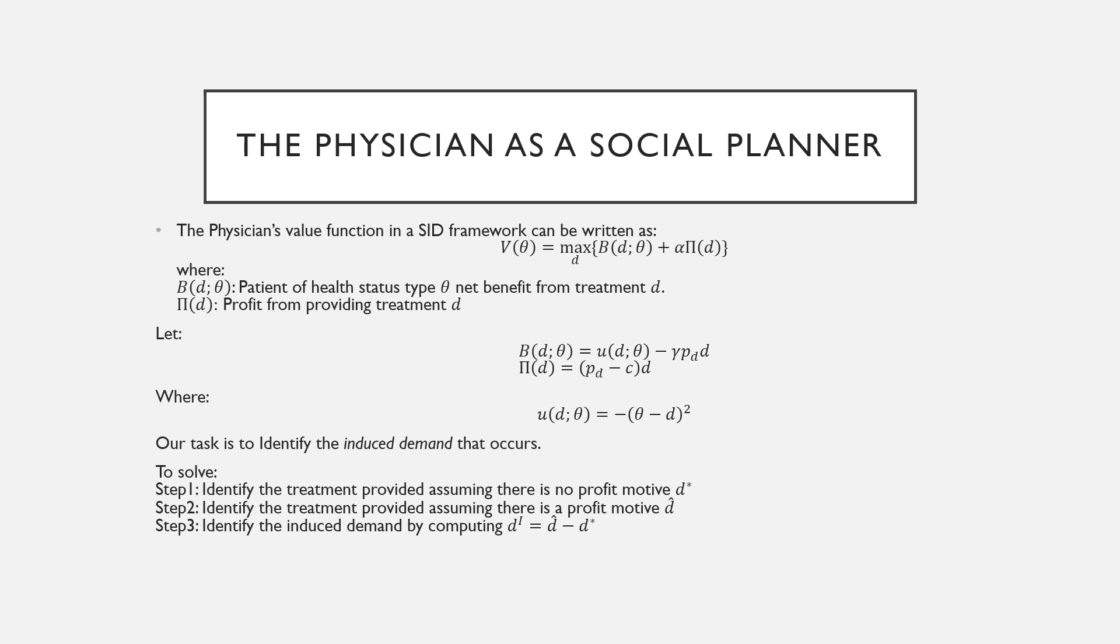We're going to be thinking about the physician as a social planner and in this framework he's going to be maximizing a value function which consists of two parts. We're going to have this B(d,θ) which is the patient of health status type θ, their net benefit from receiving treatment d, and we're going to have this π term or really this απ term which is going to be the weighted profits from providing treatment d.